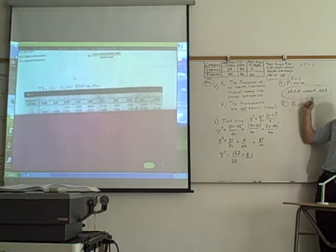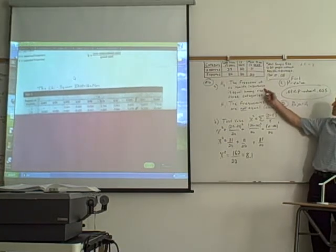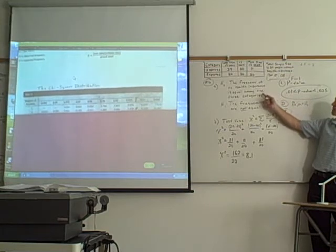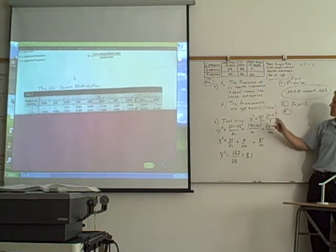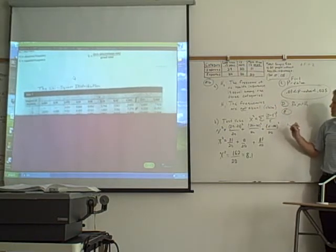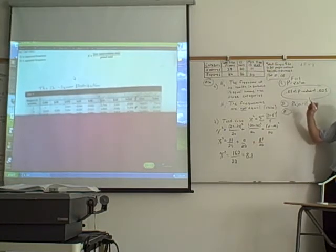And remember, p-value stands for probability value. So we're going to reject the null, meaning that we think the null is probably false. Okay? We're rejecting it, meaning that we can support the claim. So there is enough evidence to support the claim that the distributions are not equal.